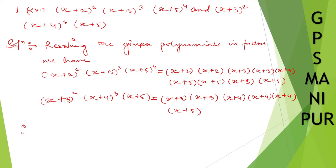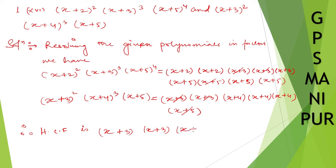Therefore, the HCF of the given polynomials: (x plus 2) cannot be taken as common. (x plus 3) appears in both, so we can take (x plus 3)(x plus 3), which is (x plus 3) whole square. (x plus 4) cannot be taken as common. (x plus 5) appears in both — only one (x plus 5) — so we take (x plus 5). Therefore, HCF is (x plus 3) whole square into (x plus 5).